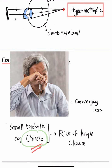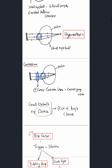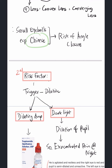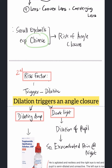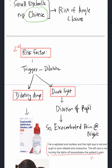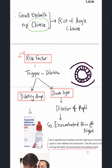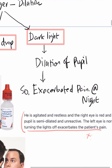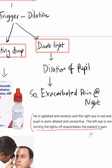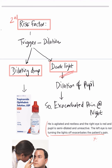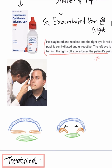Small eyeballs, especially in oriental or Chinese populations, carry greater risk of angle closure. The second risk factor involves triggers that cause pupil dilation. A dilating drop such as tropicamide — given to dilate the pupil for retinal examination — or simply a dark environment can trigger closure. In our patient, turning off the lights exacerbates pain because pupil dilation in the dark increases the angle closure.